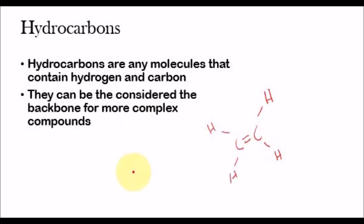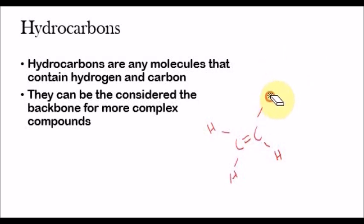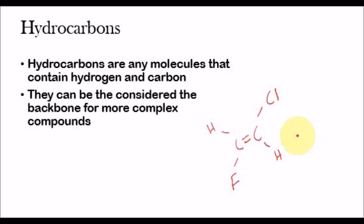Let me give you a brief example of what I mean by that. So, this is a very basic hydrocarbon right here, and this is the backbone. We can start altering this hydrocarbon — instead of having a hydrogen here, we can replace it with a chlorine atom. And instead of having a hydrogen atom here, we can replace it with a fluorine atom. So, hydrocarbons are basically the backbone, and then we can start replacing the hydrogens with other atoms. There are so many different combinations of what we can do. Whenever we start changing what the hydrogens are, that's when we start to get more and more complex molecules.